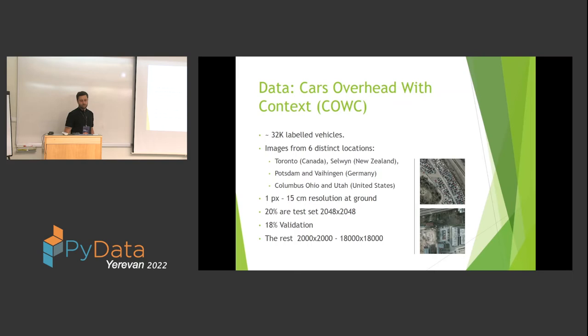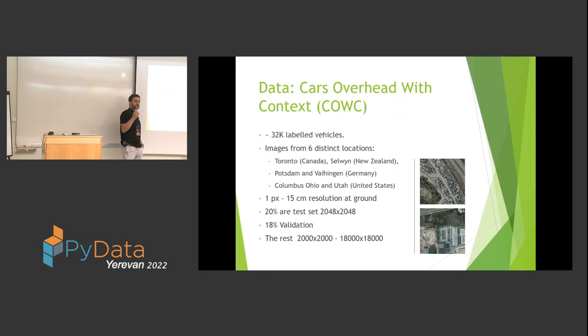Now for the main topic: detecting vehicles from satellite imagery. The dataset has 32,000 labeled vehicles. Images were captured from six distinct locations, with a ground resolution of one pixel per 15 centimeters — so every pixel represents 15 cm in the real world. A car averaging 3 meters in length will appear as roughly 20×20 pixels in the image.